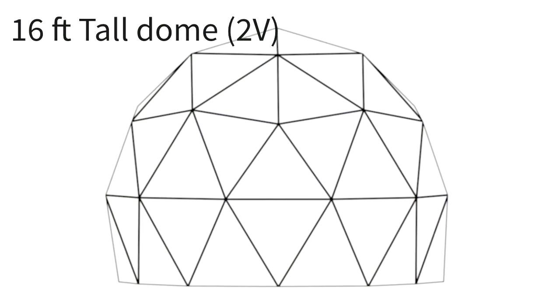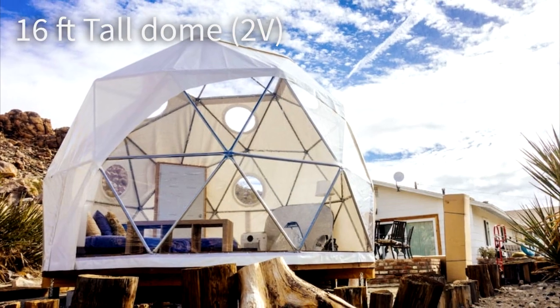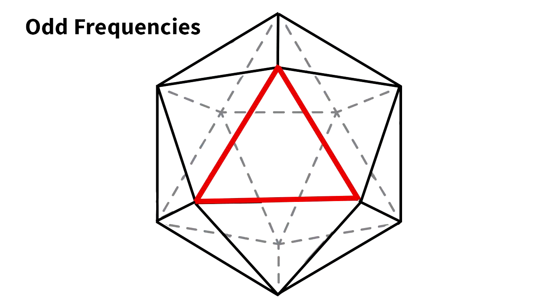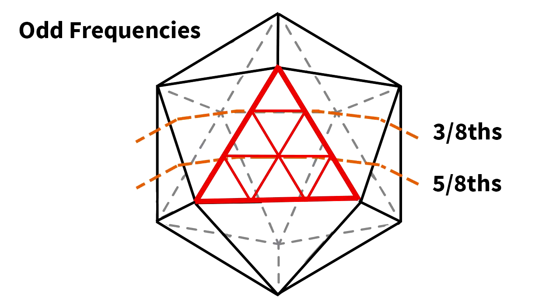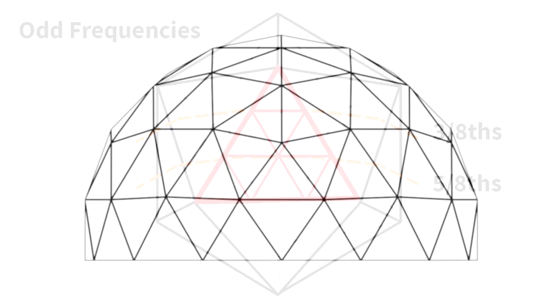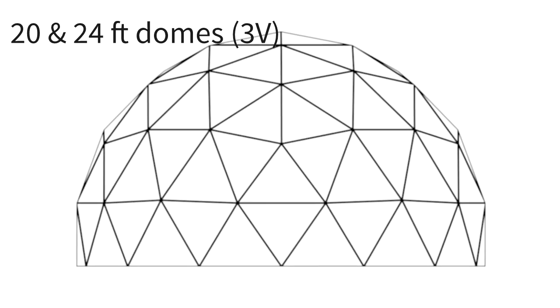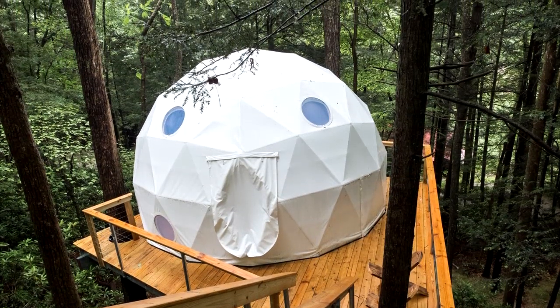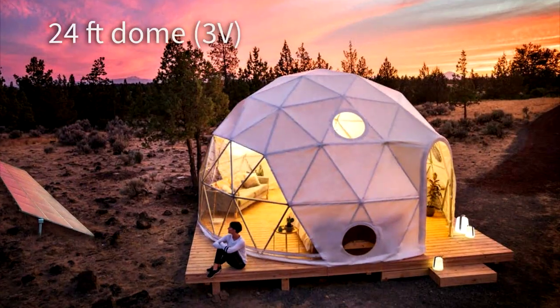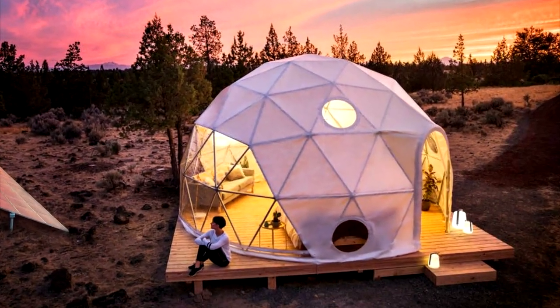The natural hemisphere of an odd frequency dome lands not on the true equator but at either 3/8 or 5/8. Our 20 foot and 24 foot domes are three frequency 5/8 spheres. Here at Pacific Domes, we opt for 5/8 to maximize the dome's height.